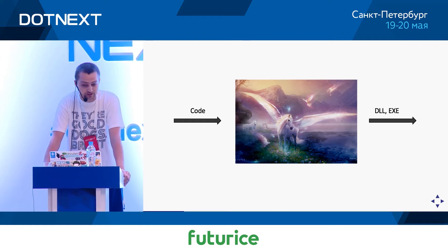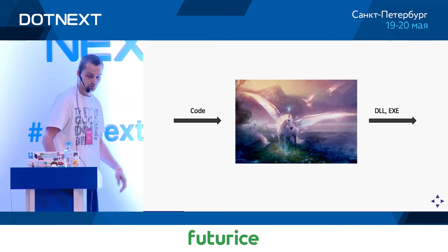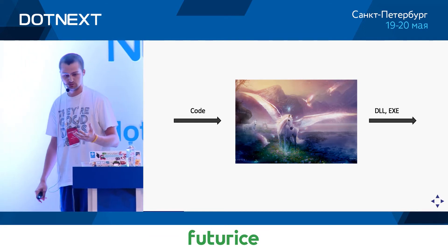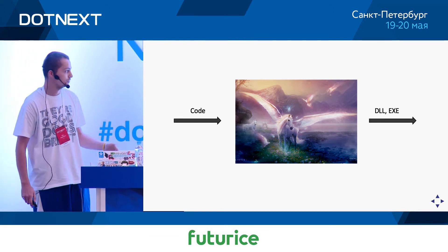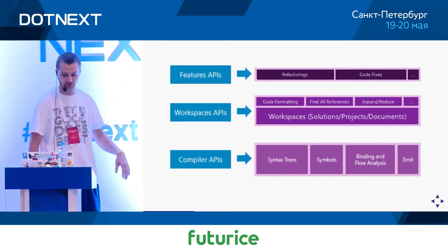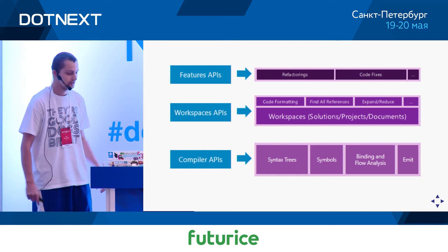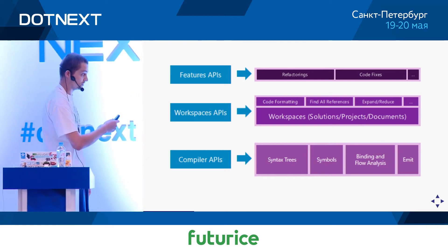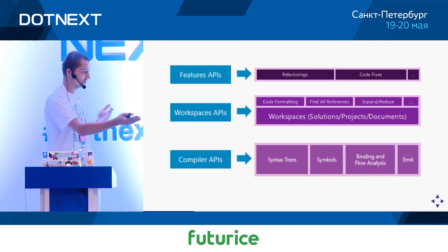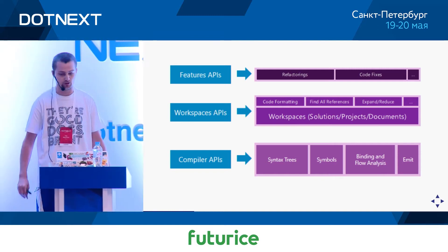This is exactly the achievement of Roslyn: it replaces the black-box unicorn with a set of well-defined compiler APIs, giving us access to knowledge that was previously very difficult to obtain. Roslyn has three levels of APIs. The compiler APIs represent the compiler pipeline — effectively the process the compiler goes through as it deals with our code. It starts with plain text, then the code is parsed, tokenized, and syntax trees are formed.